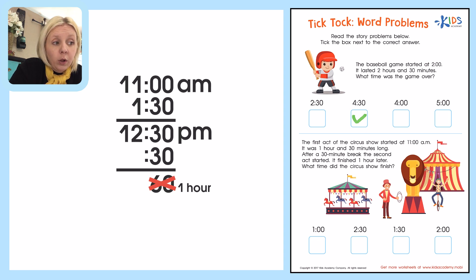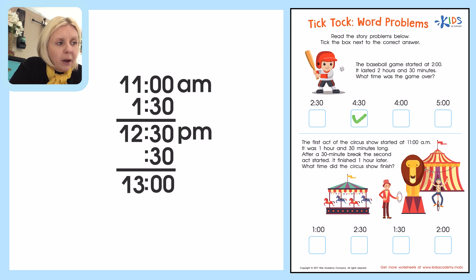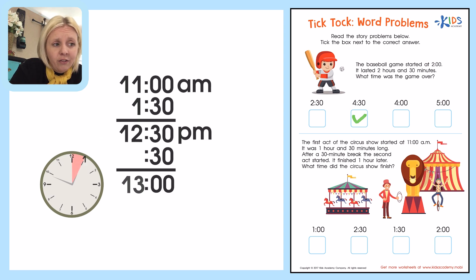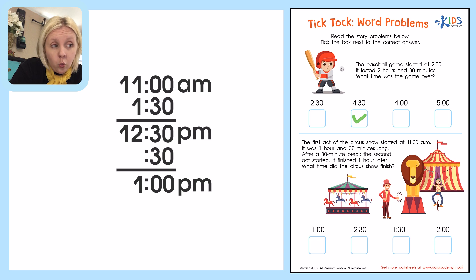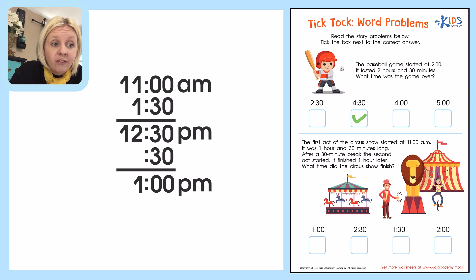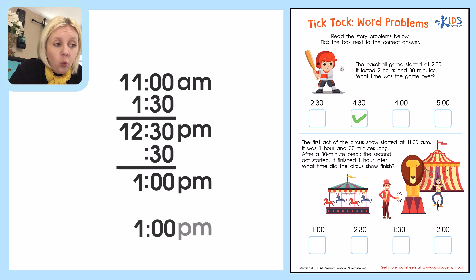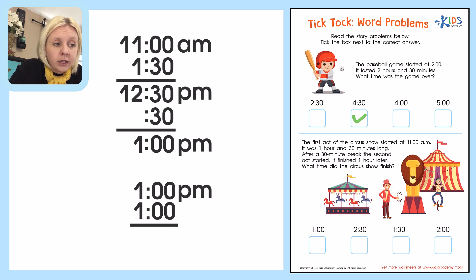So 12 plus 1 would be 13, but there's no 13 o'clock. When you think about a clock, after 12 o'clock what comes next — what's 1 hour later? It would be 1 o'clock. So the 60 minutes equals 1 hour, and we add 1 to 12, which gives us 1 o'clock. Then the problem says it finished 1 hour later, so if we add 1 hour to 1 o'clock, it's going to be 2 o'clock.